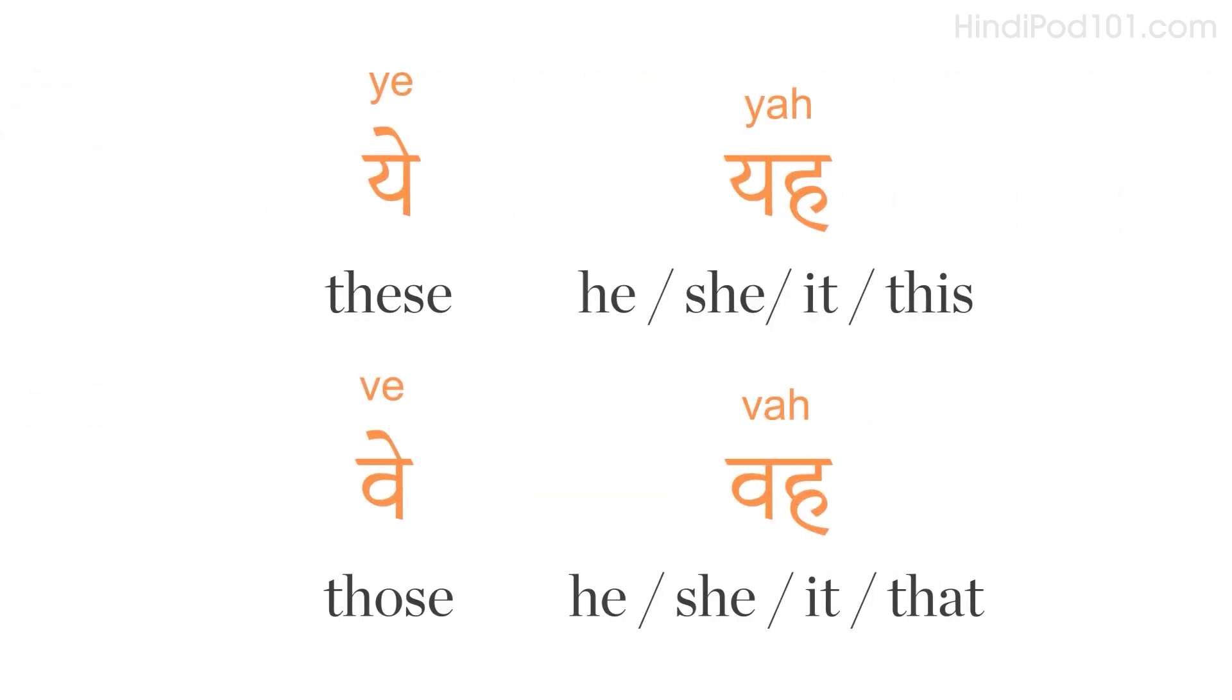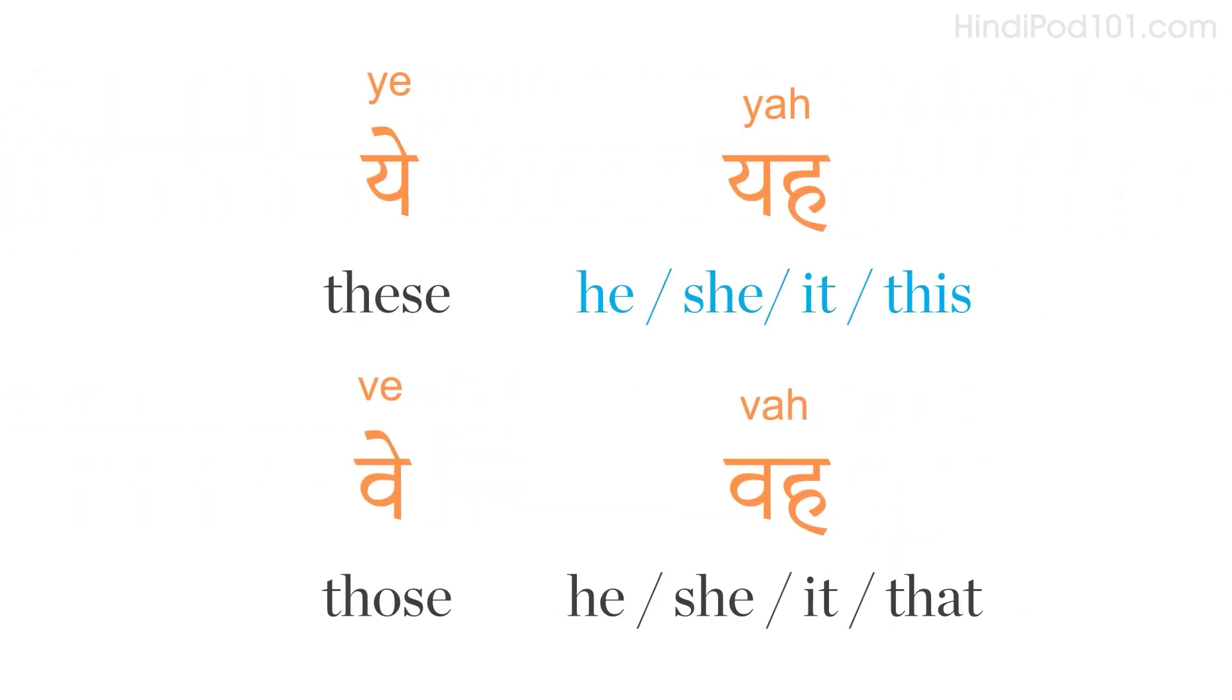Let's check the third person singular now. For he, she, it, this, we use 'yeh'. And for he, she, it, that, we use 'weh'. The plural will be 'yeh' for these and 'weh' for those. So, how about we try and make some sentences now?